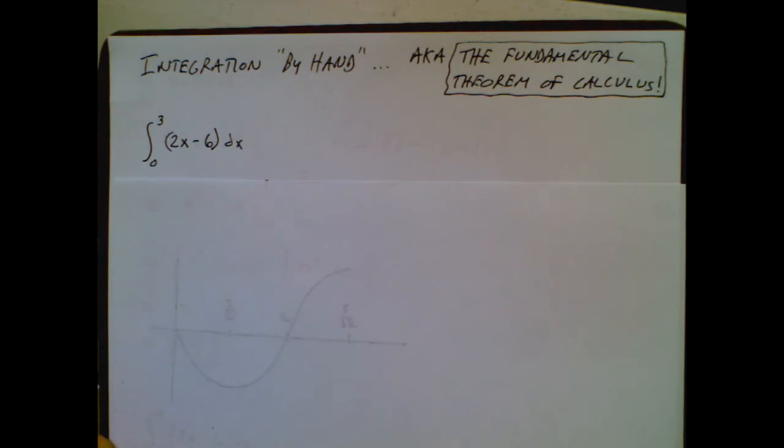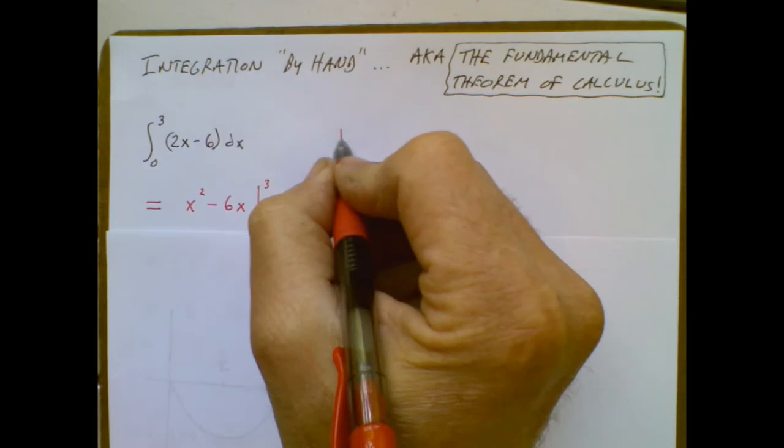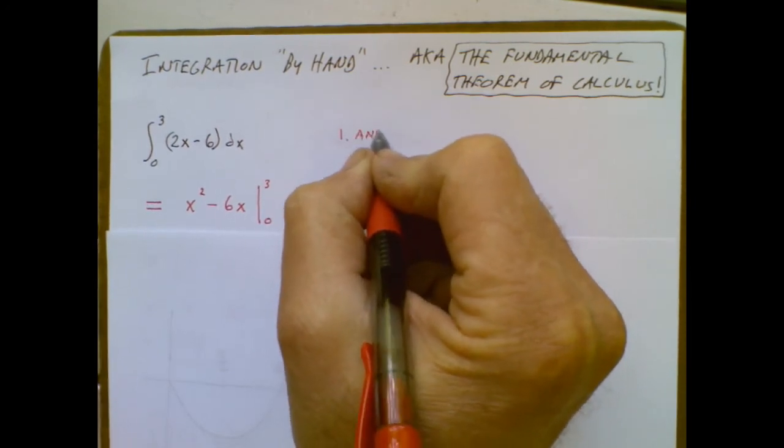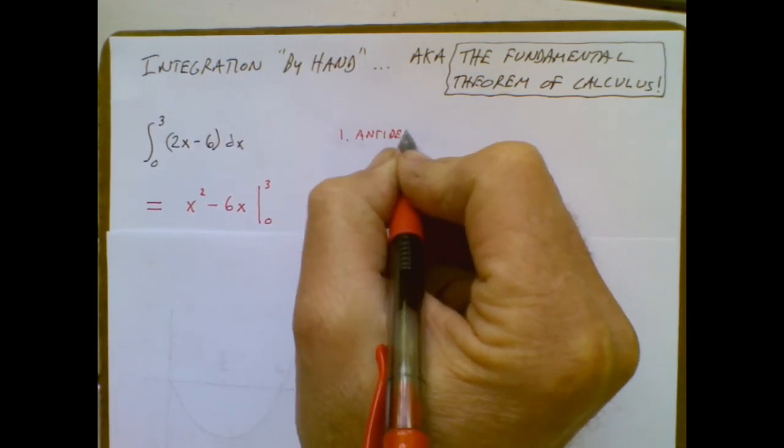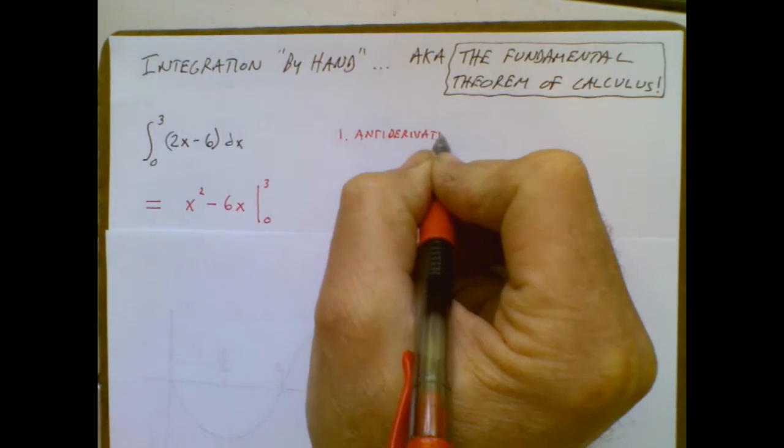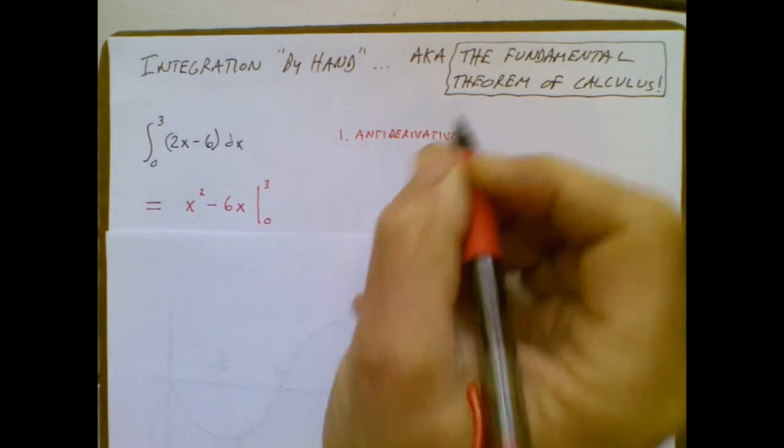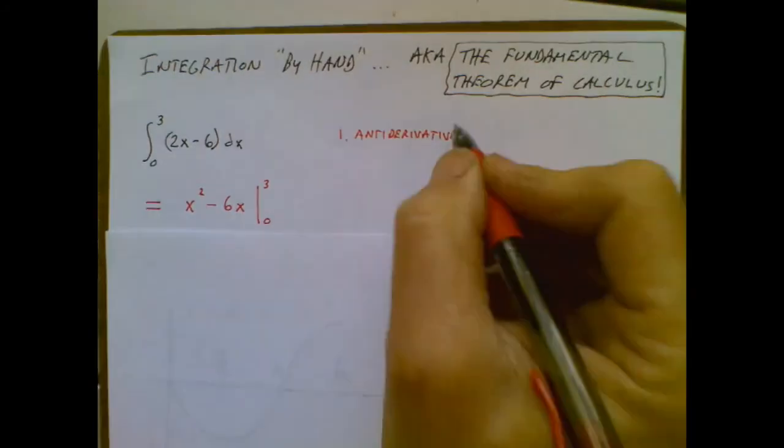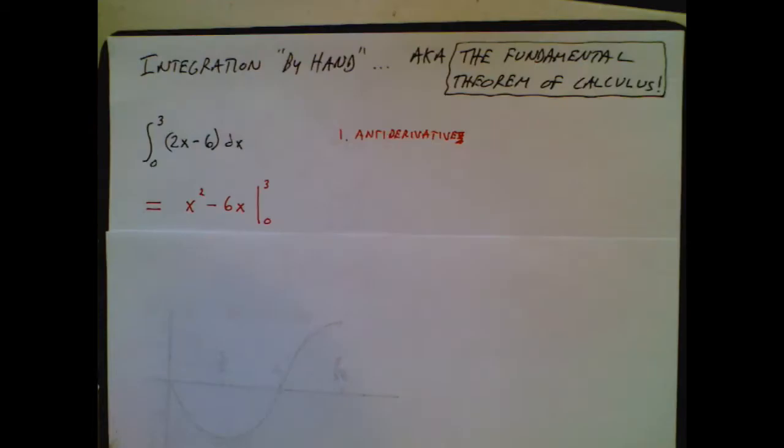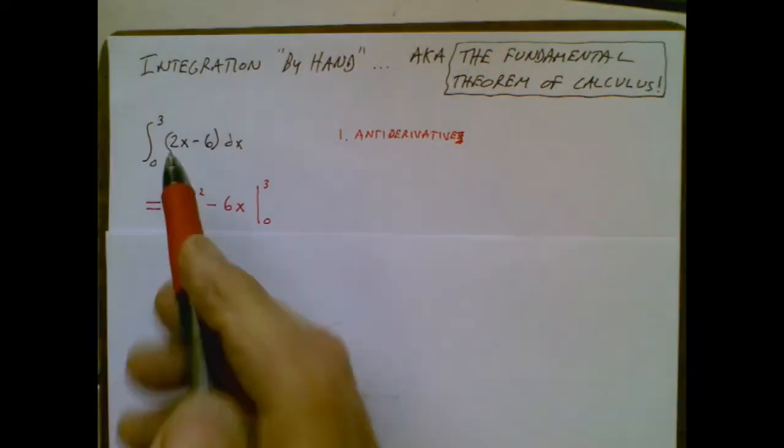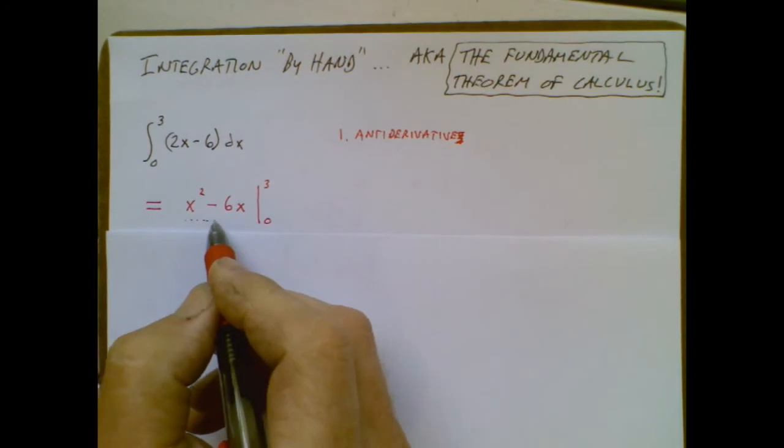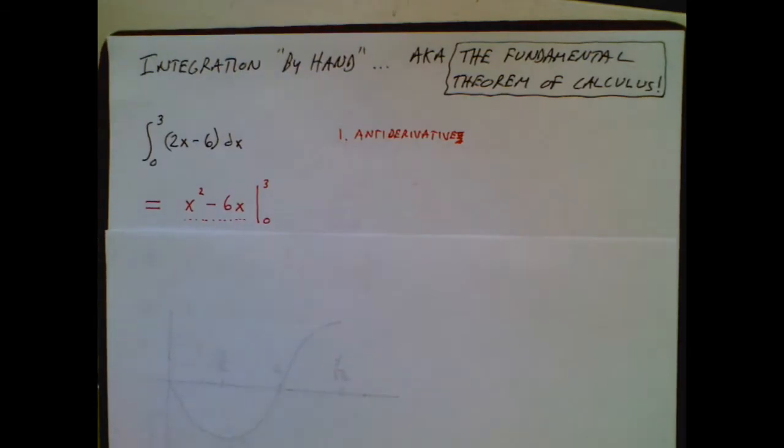Wow, that sounds weighty, so this must be a big deal. Alright, so the steps that you do when you get a problem like this, your very first step is find the antiderivative. This is why we practiced taking antiderivatives earlier, by the way. So you find the antiderivative of 2x minus 6. It's x squared minus 6x.